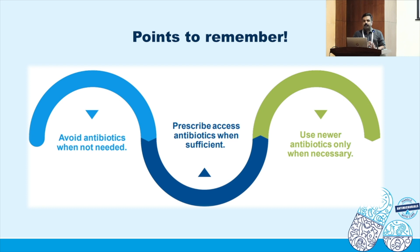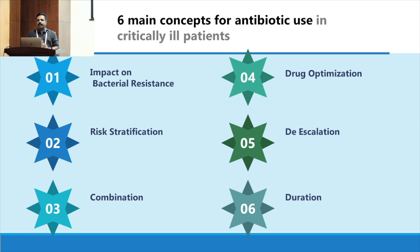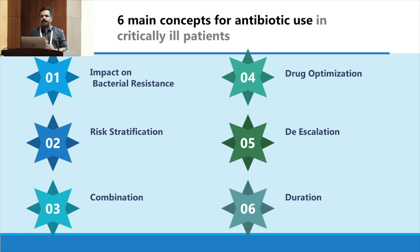The main points to remember are: avoid antibiotics when not needed, such as in viral infections; prescribe access antibiotics when sufficient; use newer antibiotics only when necessary; and avoid using them empirically when possible. The six main concepts of antibiotic use in critically ill patients are: impact on bacterial resistance, risk-stratification of patients, choosing narrow versus broad spectrum, combination therapy, drug optimization based on organ failures and site of infection, de-escalation after culture results, and restricting duration to the shortest time possible.